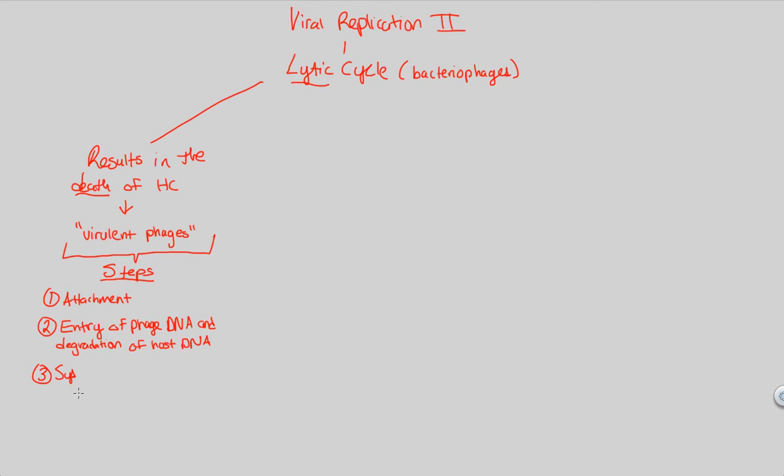Step three will be if you've degraded the host DNA and you have some phage DNA, that phage DNA will then be utilized. That phage DNA will take over the host, and the host's machinery, the ribosomes, the DNA polymerase, the RNA polymerase, all those enzymes will then be involved in step three, which is the synthesis of viral genomes and proteins. Key word here is viral, viral genomes, not host genomes, and viral proteins, not host proteins. So this is a true takeover event that we talked about previously.